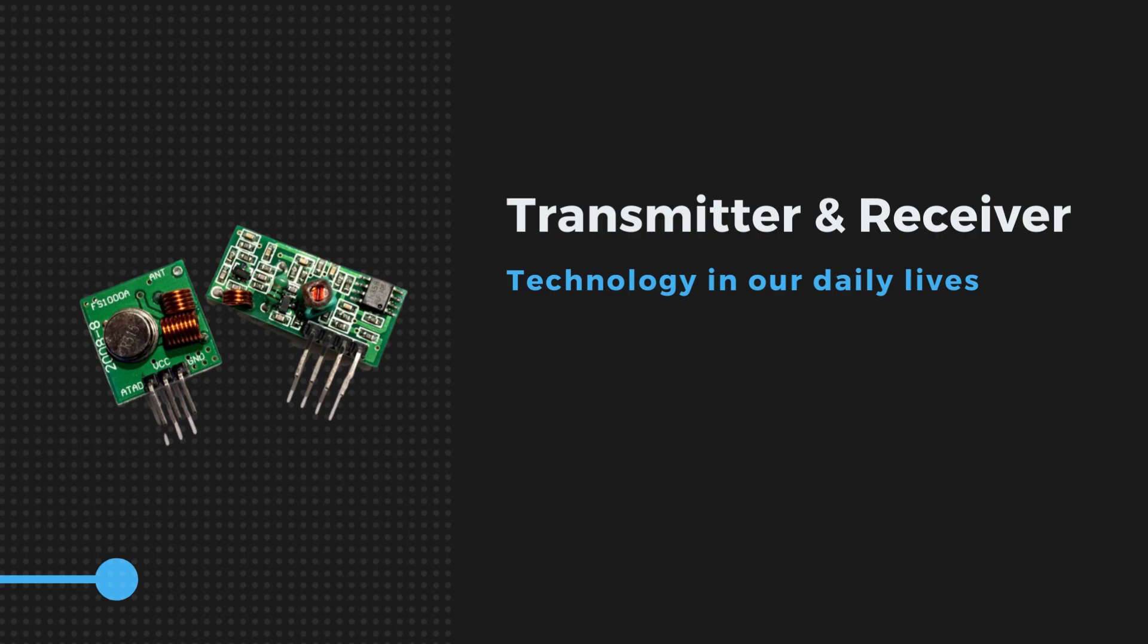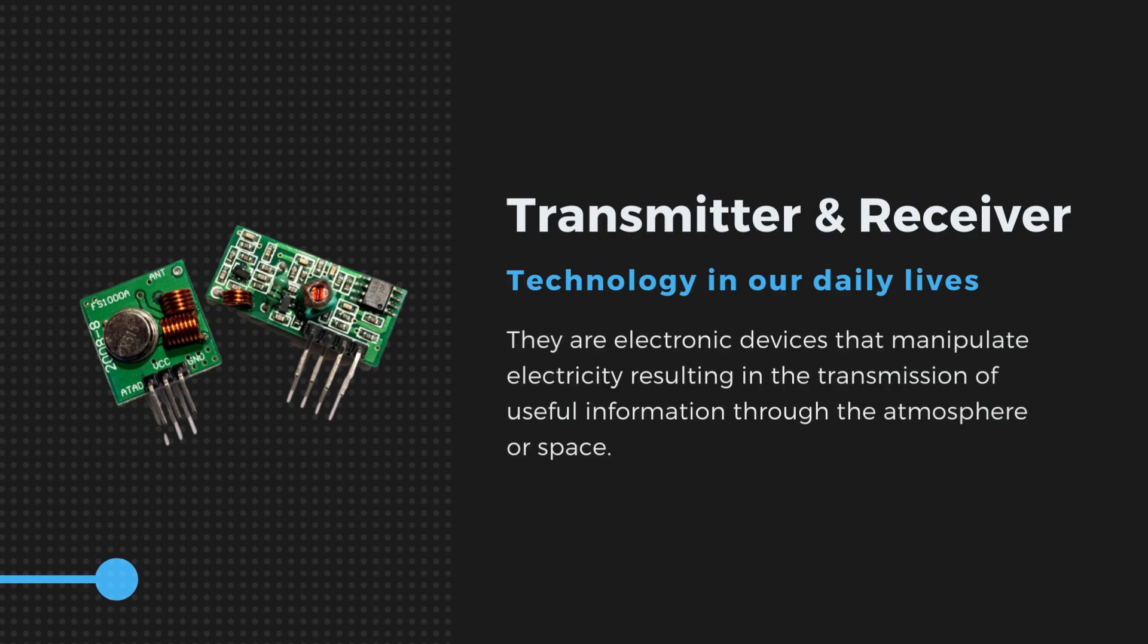Radio transmitters and receivers are electronic devices that manipulate electricity resulting in transmission of useful information through the atmosphere or space.